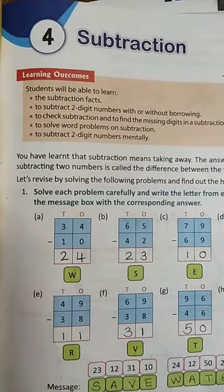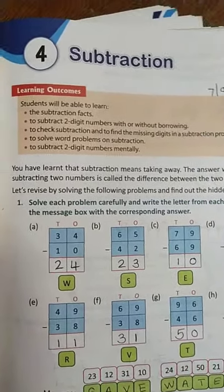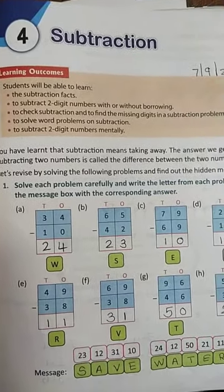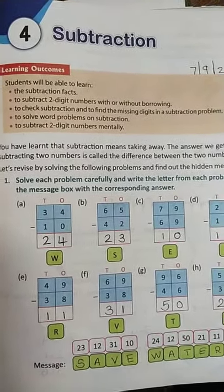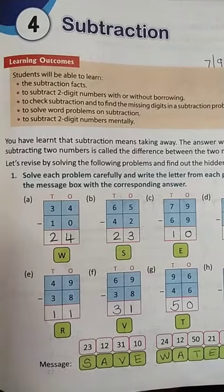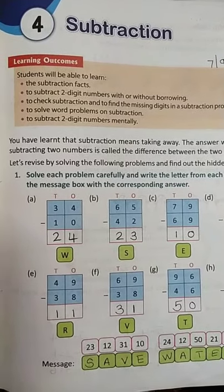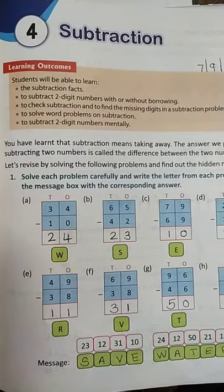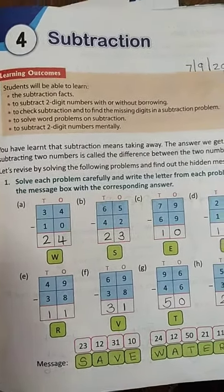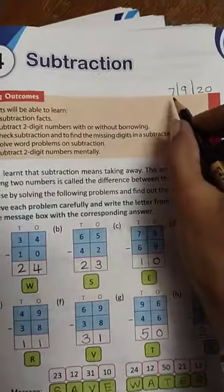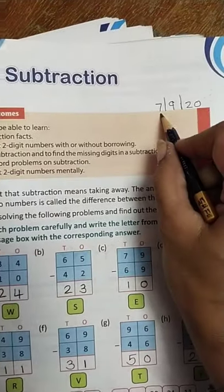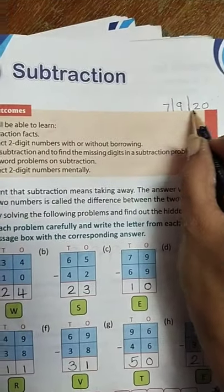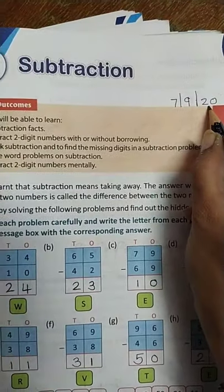Hello kids, today we will be doing subtraction, chapter number 4 in our maths textbook. You can write today's date, that is 7th September 2020.